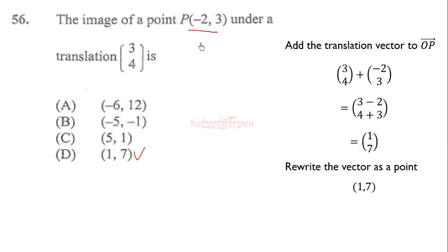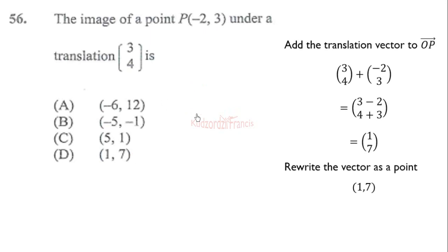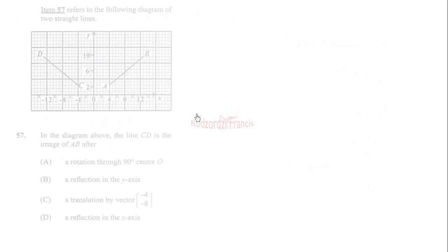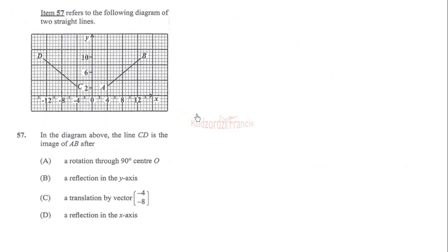Another way you can do it is just add negative 2 to 3, then also add 4 to 3, and that will give you the image. So the image point will be 3 minus 2 is 1, then 4 plus 3 is 7. You can do it as quick as that.